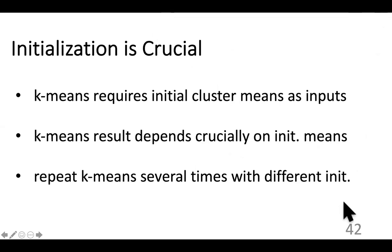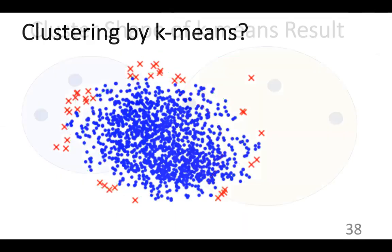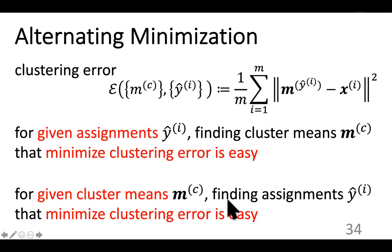What if features have different units — how can we compare a distance of one meter to one euro? When computing the squared Euclidean distance you add feature-wise distances, so you need to mix different features. You should normalize the features by a reference value — divide each length feature value by one meter and each monetary feature value by one euro — to make the comparison conceptually meaningful.